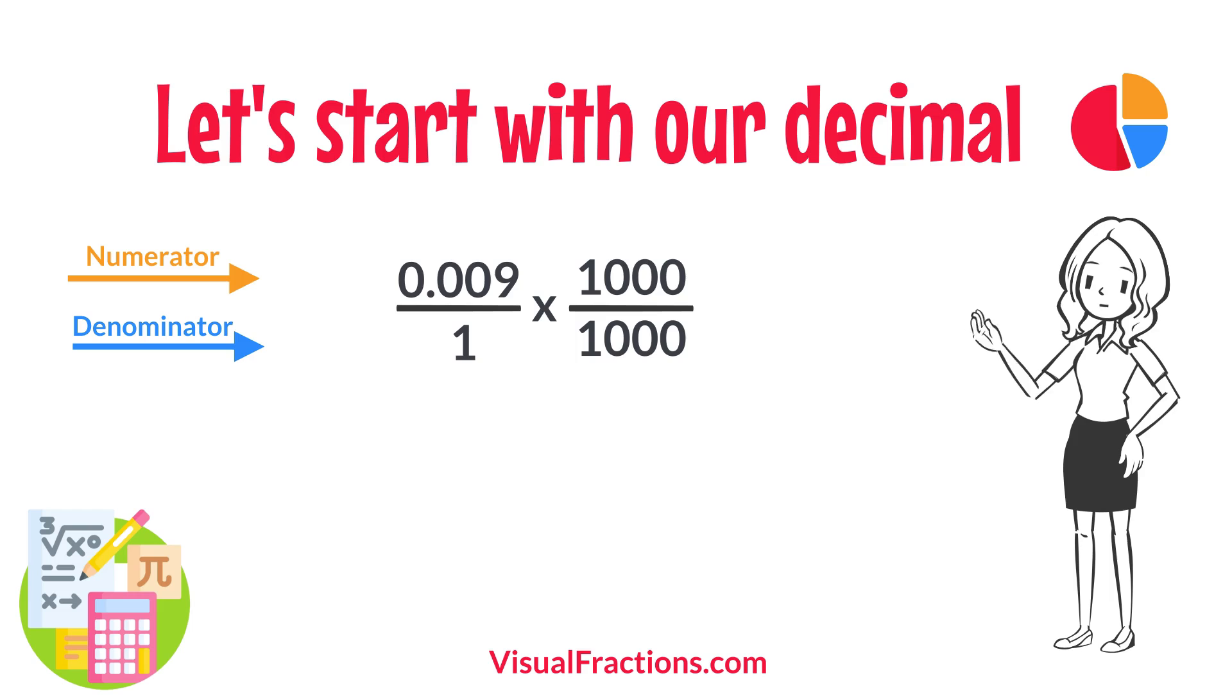So, 0.009 times 1,000 gives us 9, and 1 times 1,000 gives us 1,000.